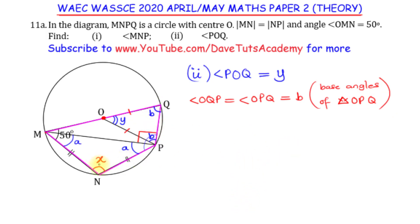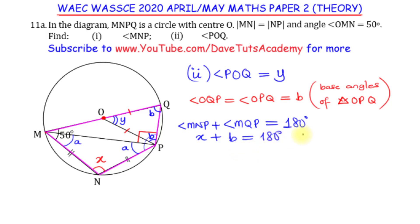We have gotten the value of X to be 100 degrees. Now, angle MNP plus angle MQP — if you are observant, you will see that they are also opposite each other in the cyclic quadrilateral. So MNP, which is X, and MQP, which is B, add up to 180 degrees because they are supplementary. So X plus B equals 180 degrees, meaning B will be 180 minus X. From our previous result, X is 100, so angle B is 180 minus 100, which is 80 degrees.